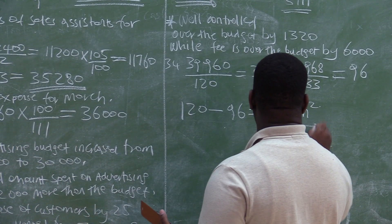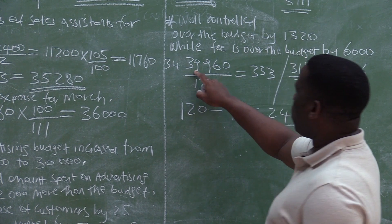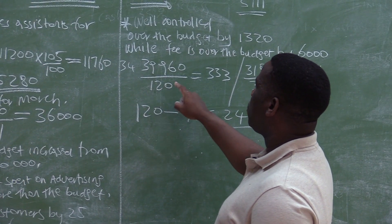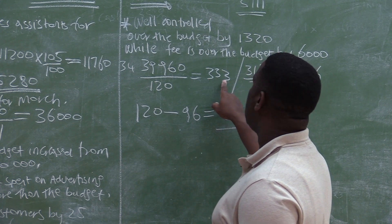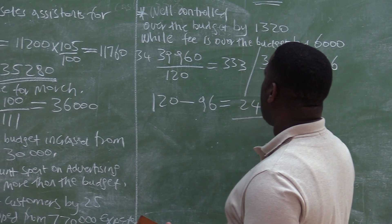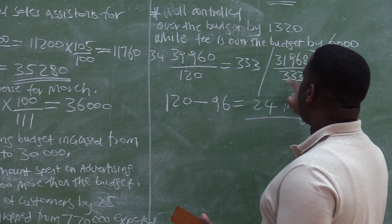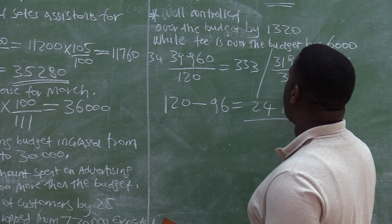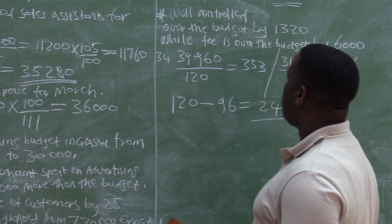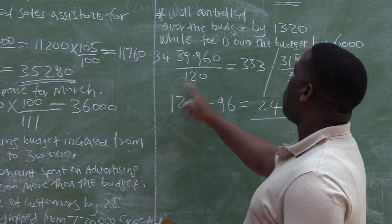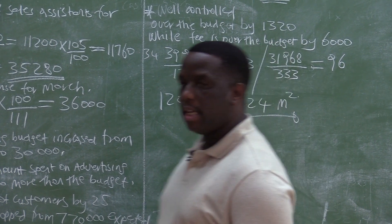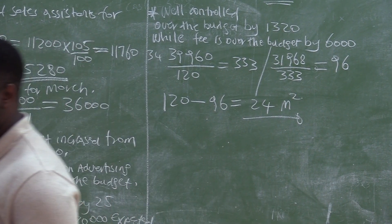So the reduction is 24 square meters, which is our final answer. We had budgeted $39,960 when we are renting 120 square meters. So each square meter is $333. So if then we look at the amount that we paid, which is $31,968, and divided by the amount of each square meter, we can be able to know how many square meters we paid for. So we paid for 96 square meters. So from 120 square meters to 96 square meters, we can see that the reduction in square meters is 24.